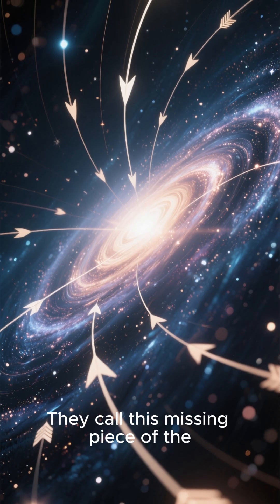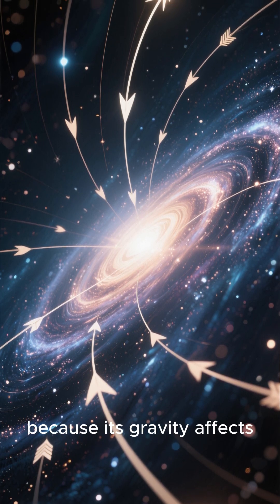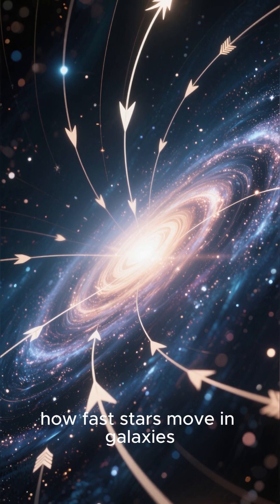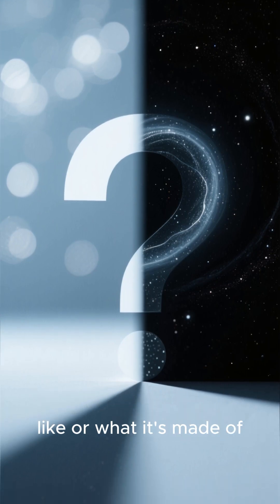They call this missing piece of the universe dark matter. And they know it's there because its gravity affects how fast stars move in galaxies. But they don't know what it looks like or what it's made of.